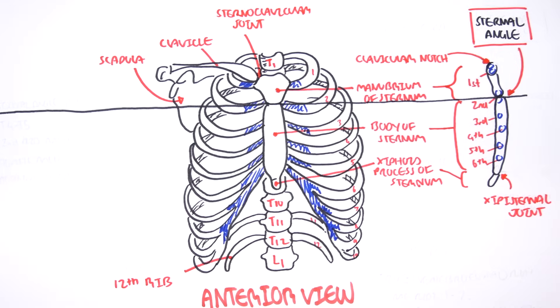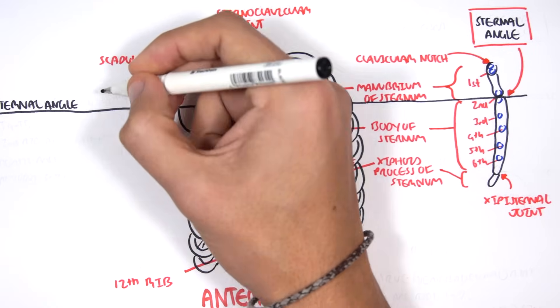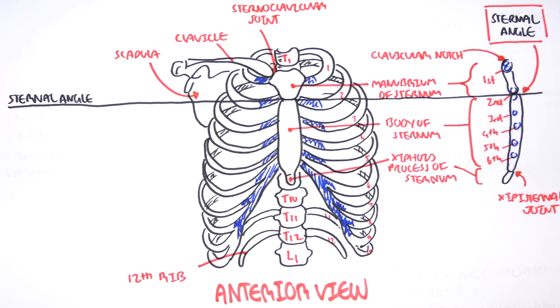Now as I said, the sternal angle, or the angle of Louis, is an important landmark, because many structures can be found along this angle. So if we were to cut straight along, in a horizontal plane, along the sternal angle, we will hit and find these things.